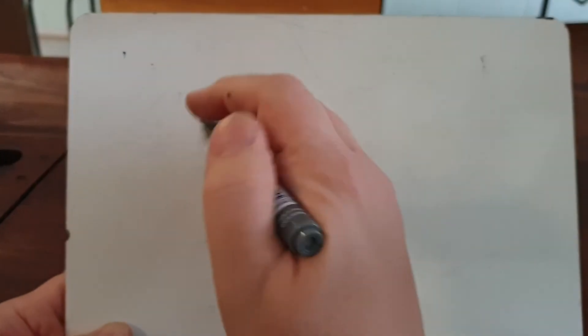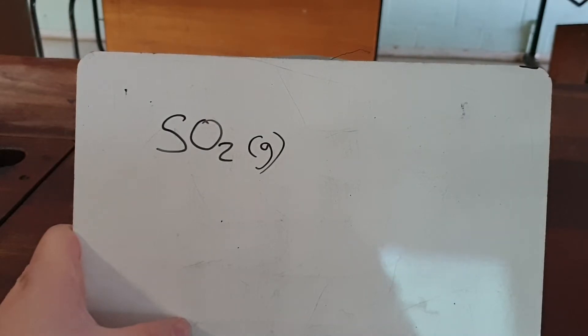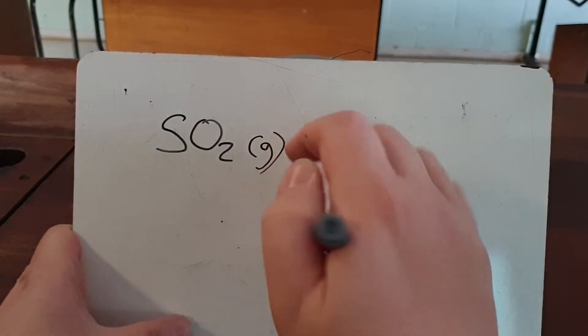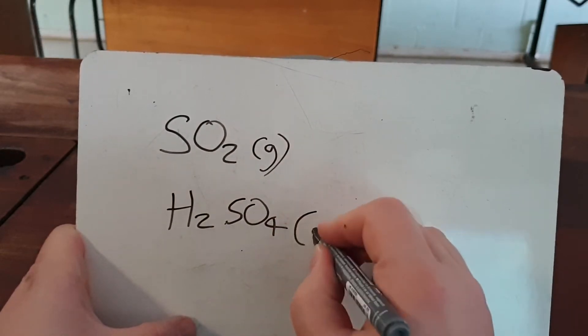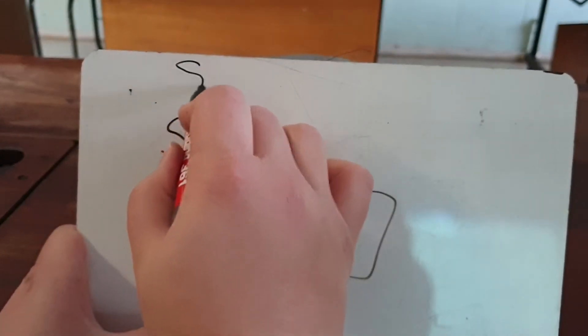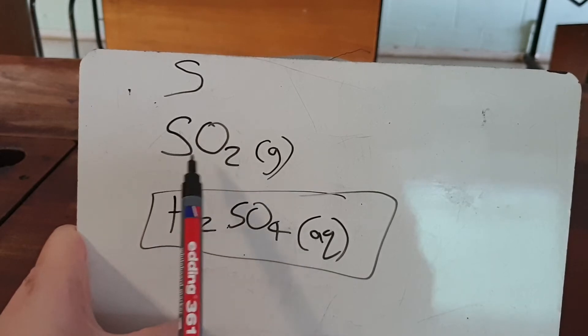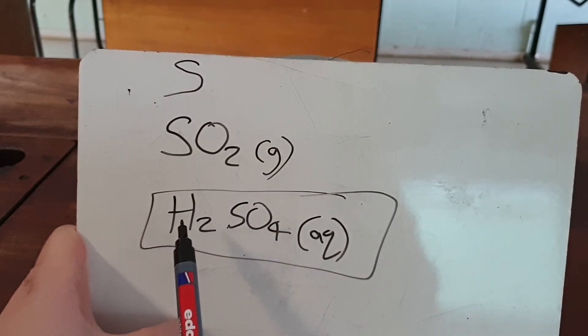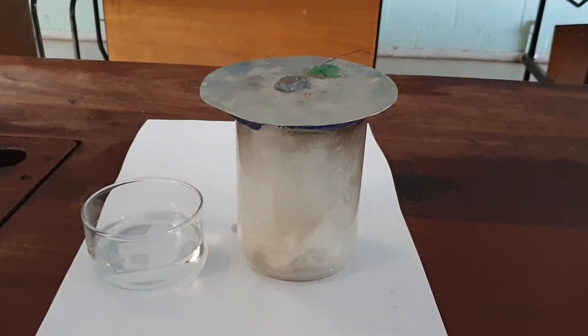What is actually happening: sulfur dioxide, SO2, is a gas. When it comes into contact with clouds — which are made of H2O — it dissolves. When sulfur dioxide dissolves in water, it makes H2SO4 (aqueous), which you may recognize as sulfuric acid. So we started with sulfur as an impurity, burnt the fuel, sulfur reacted with oxygen to make SO2, which dissolved in the cloud water to make sulfuric acid.